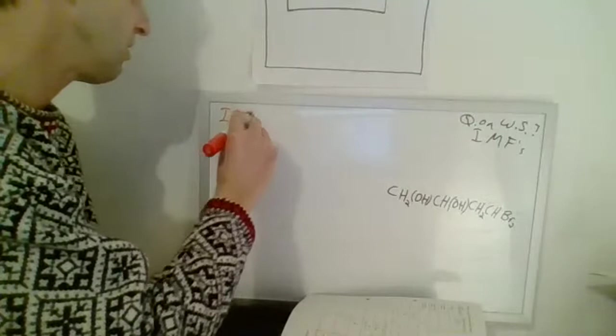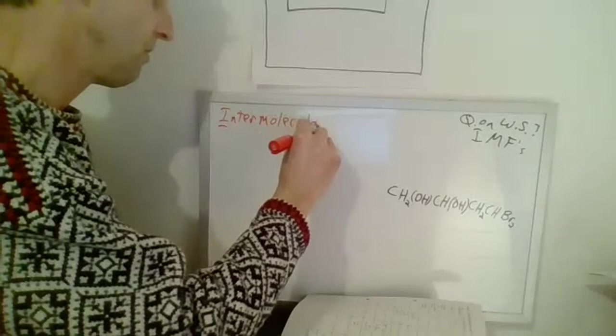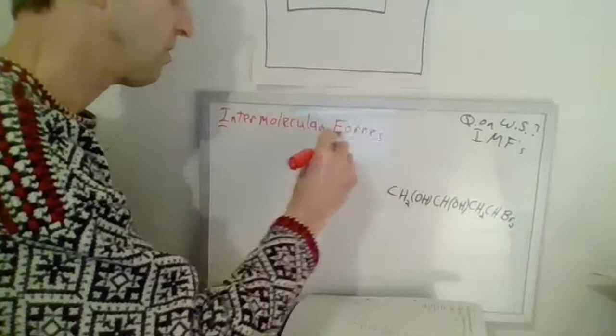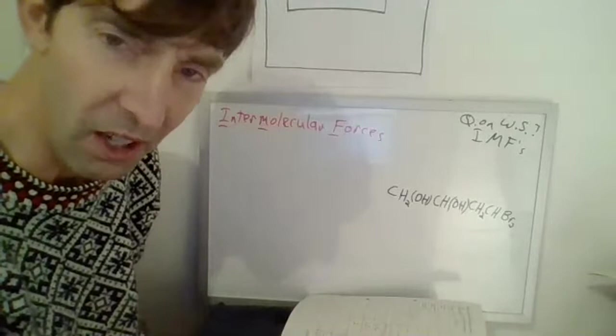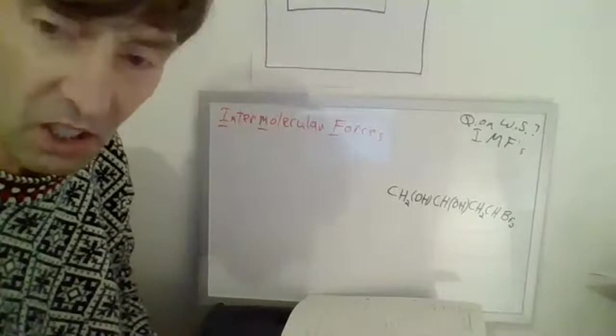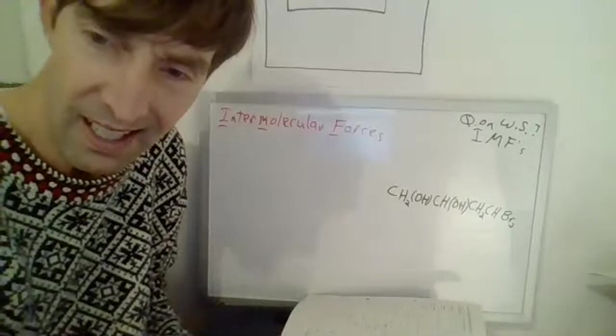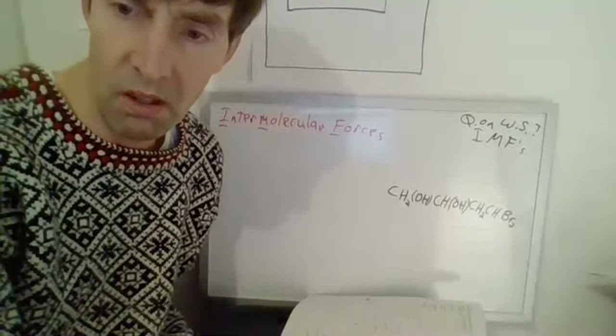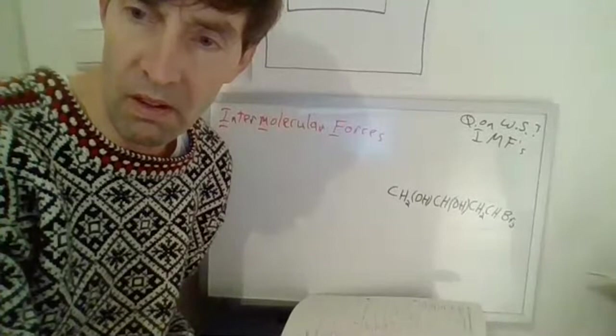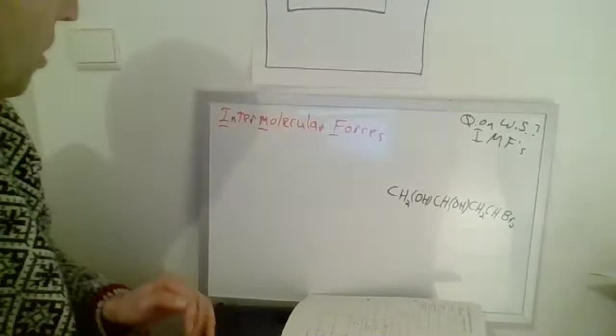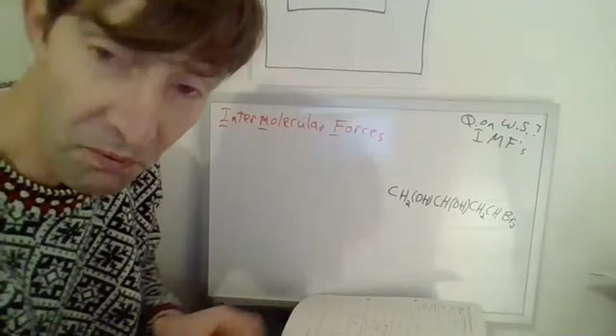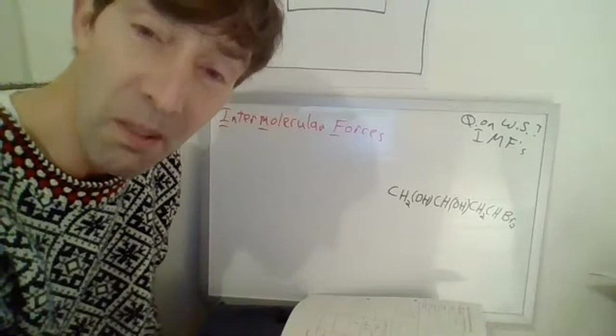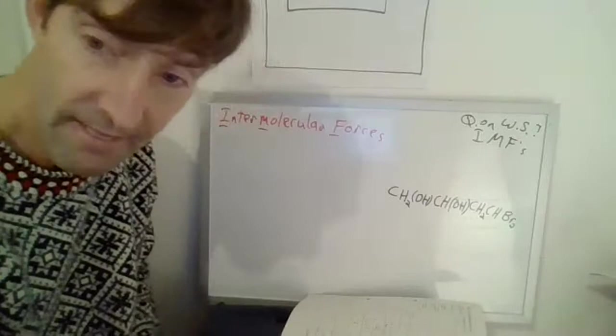Then why don't we just write OH4? I'm not sure what you mean by that. You mean CH4? In the meantime, we're going to start with something new. OH2. Because they weren't both on the same C, that's why. One was on the first C, and the next one, Alessia, was on the next carbon. So we got to separate them. Okay. Ready? Here we go. IMFs. This stands for intermolecular forces.